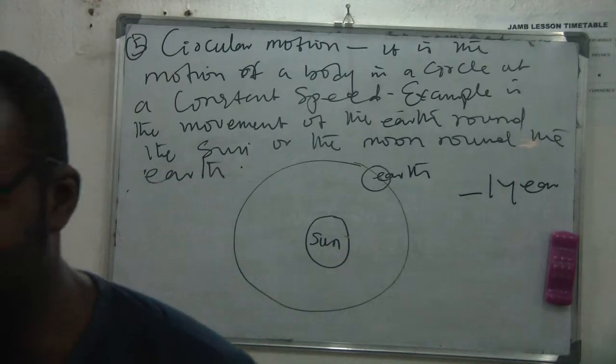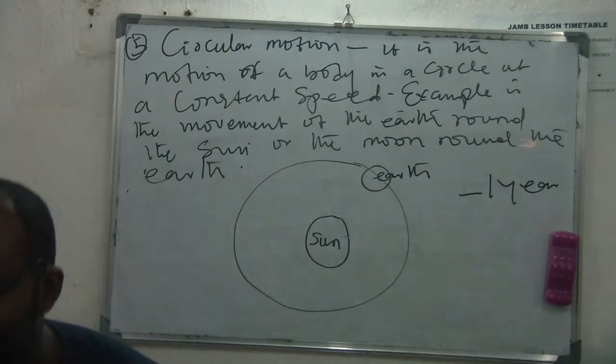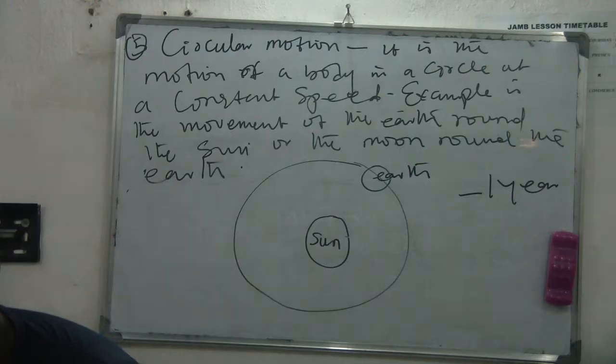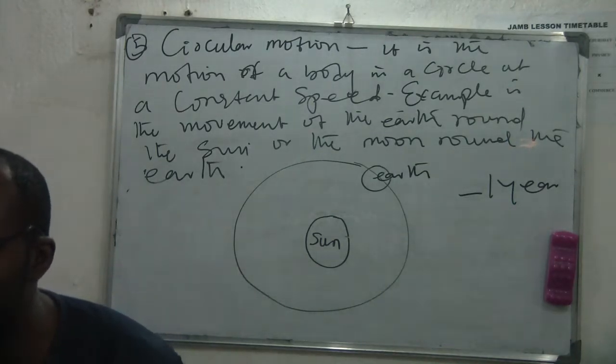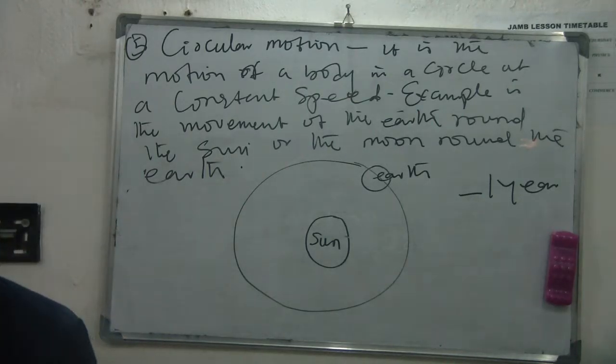And you have to identify this type of motion. That will ask you: the movement of Earth about its axis, what kind of motion is that? Rotational motion. Then it will also ask you: the movement of Earth around the sun, what kind of motion is that? Circular motion.